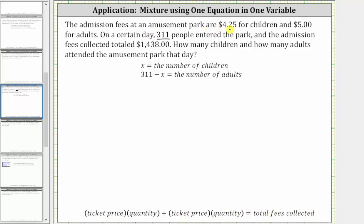Because the fee is $4.25 for each child and x is the number of children, the total fees collected from the children would be 4.25 times x. And then we have plus the fees collected from the adults, which is $5 times the number of adults, which is $5 times the quantity 311 minus x. And the sum of these products must equal the total fees collected of $1,438.